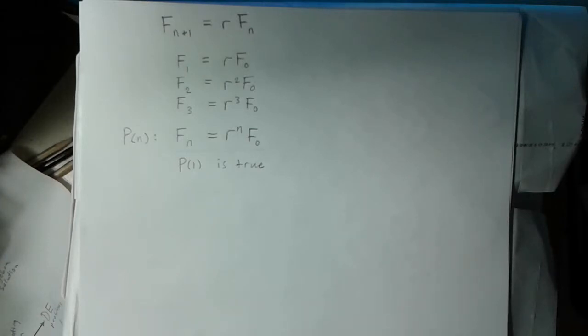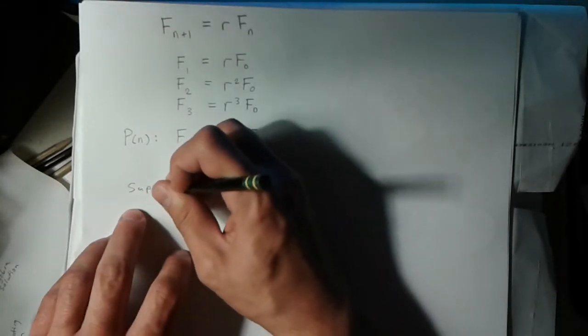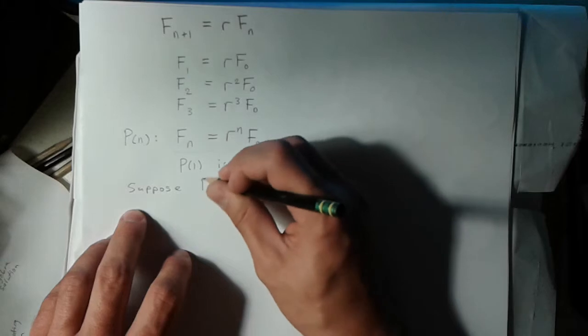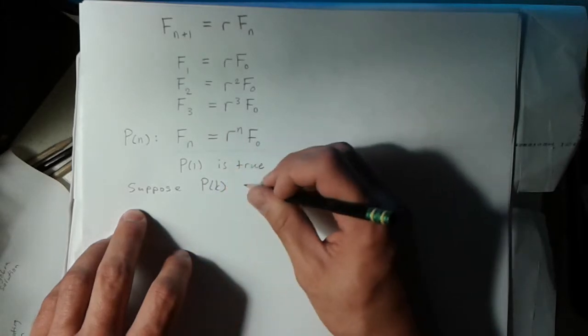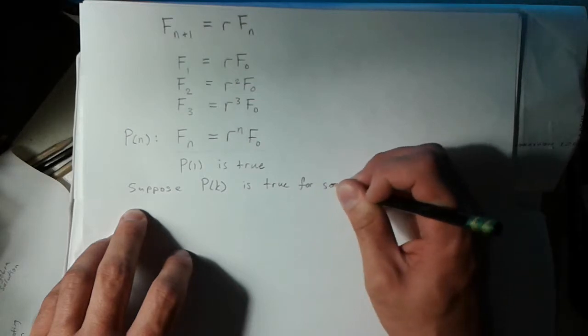Now what we want to do is suppose that there is a certain n for which this statement is true. We'll call that value k. So suppose P(k) is true for some k.